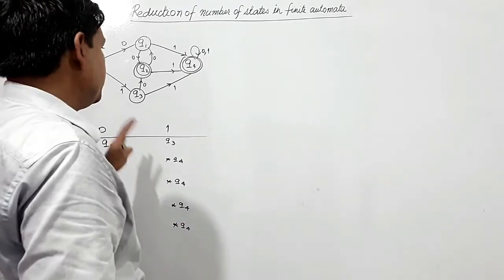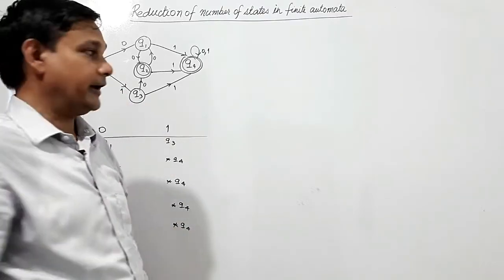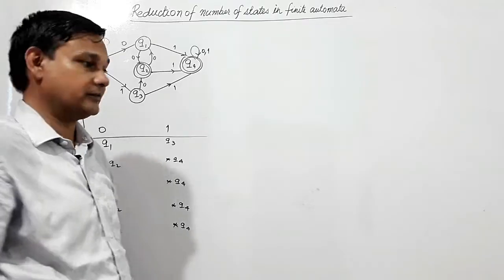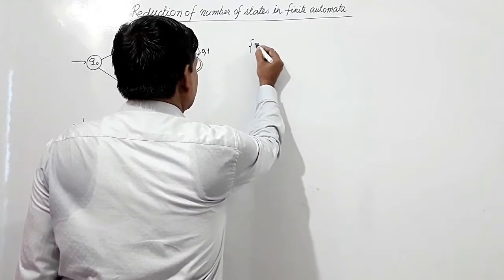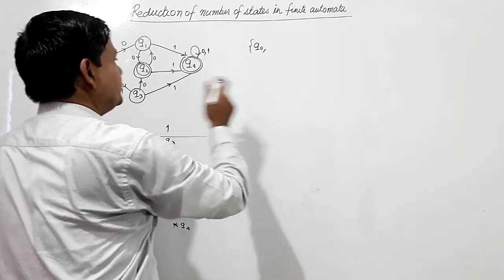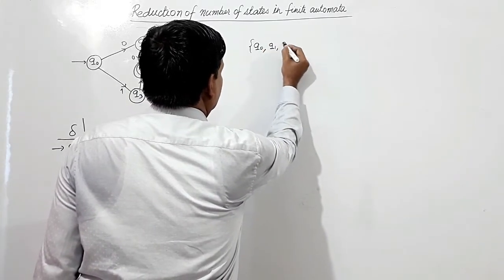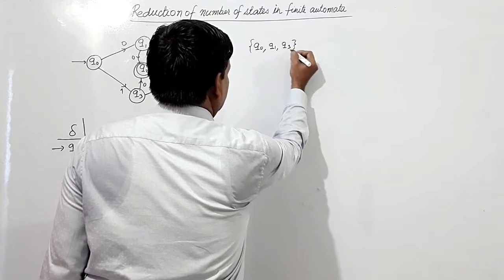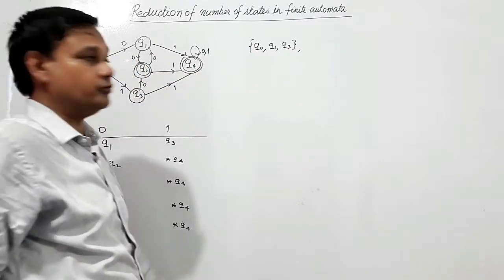Now we shall divide these states into two sets: the set of non-final states and the set of final states. The set of non-final states is {Q0, Q1, Q3} and the set of final states is {Q2, Q4}.